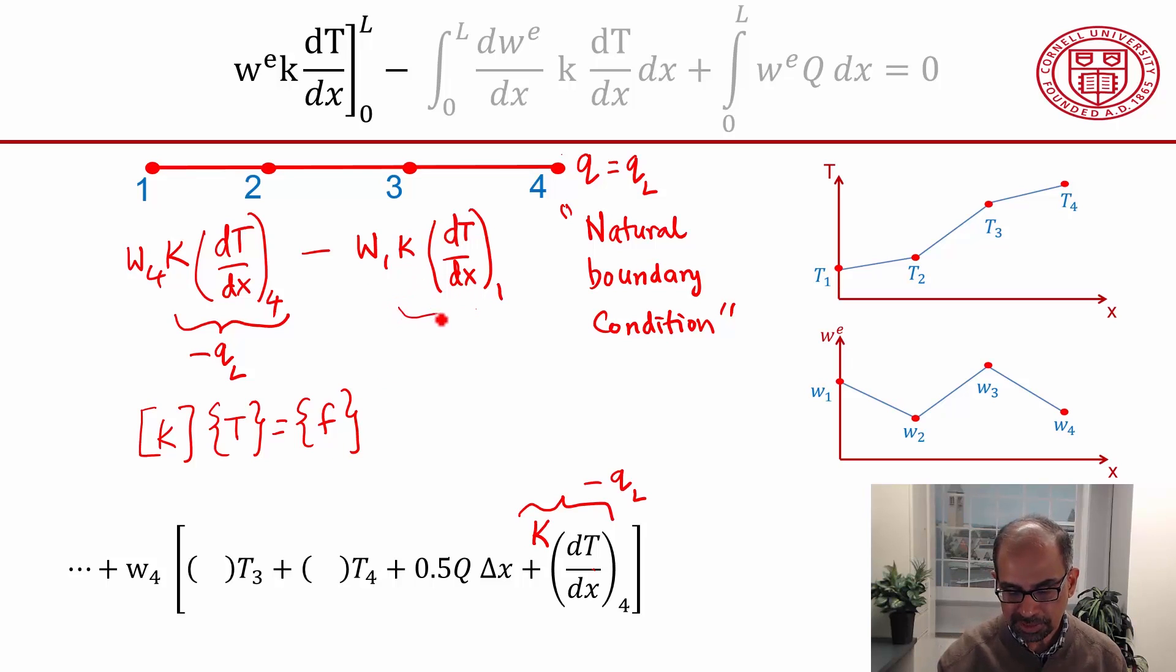And then this term gives you the flux. So this is the flux at the left boundary, which is over here. So it's giving you the flux at this boundary, and that's not known. What's done is you use that term to evaluate the flux at the left boundary, and then you can use that to check energy balance.